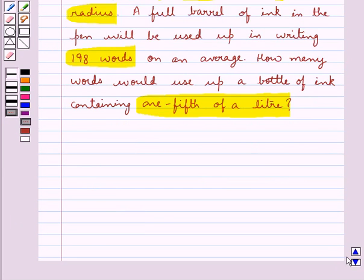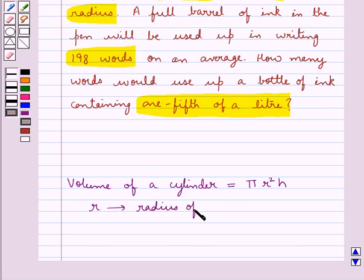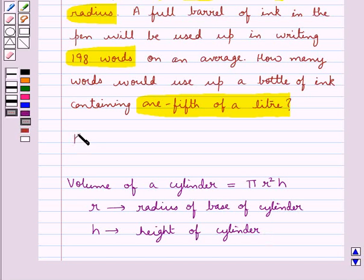First we shall recall the formula to find the volume of a cylinder. This is equal to π r² h. Here r is the radius of the base of the cylinder. Here h is the height of the cylinder. This is the key idea for this question.